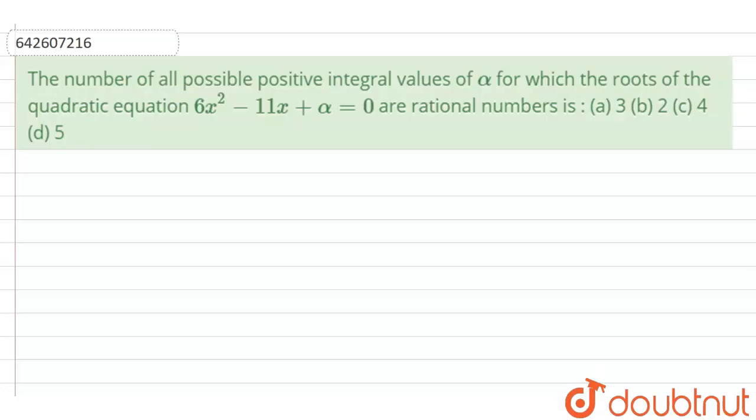Hello everyone. Let's start with the question. The question says that the number of all possible positive integral values of alpha for which the roots of the quadratic equation 6x square minus 11x plus alpha equals 0 are rational numbers. Options are: a) 3, b) 2, c) 4, and d) 5.